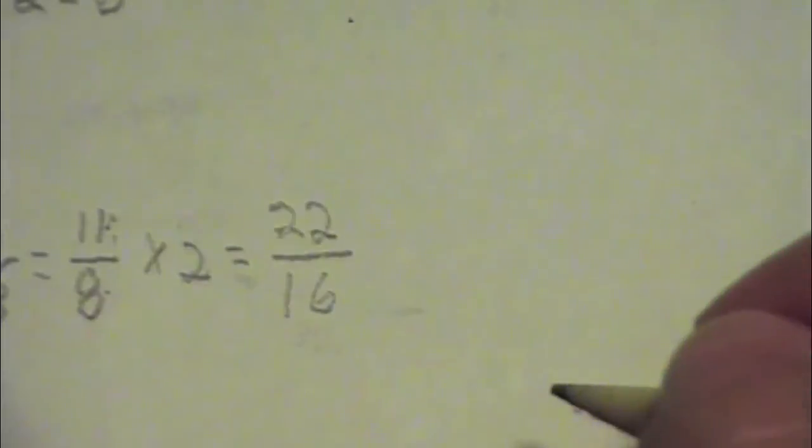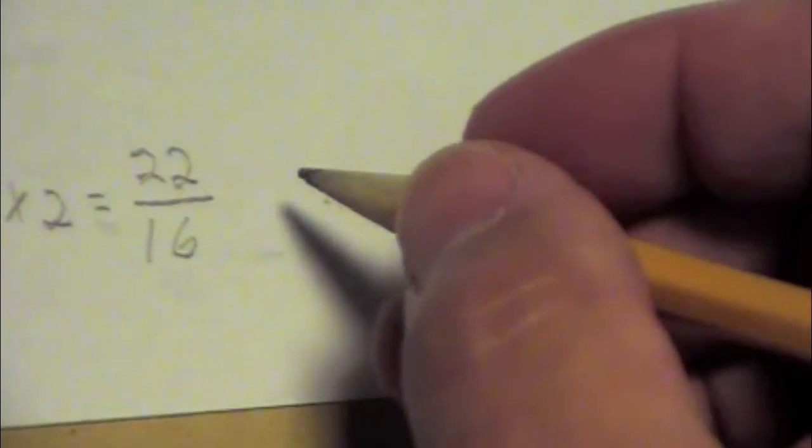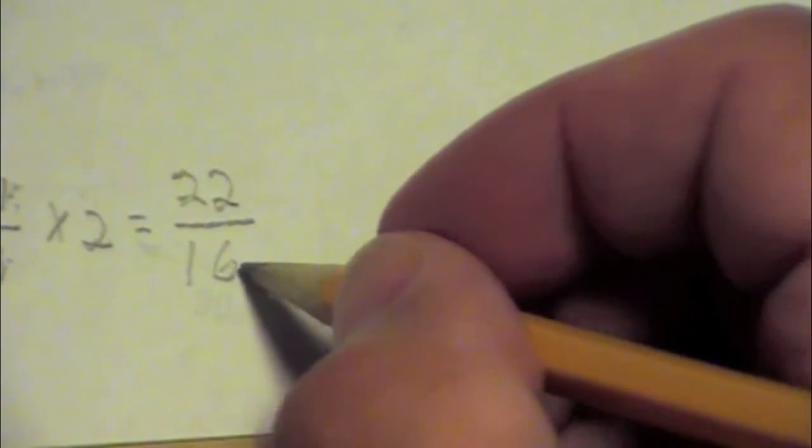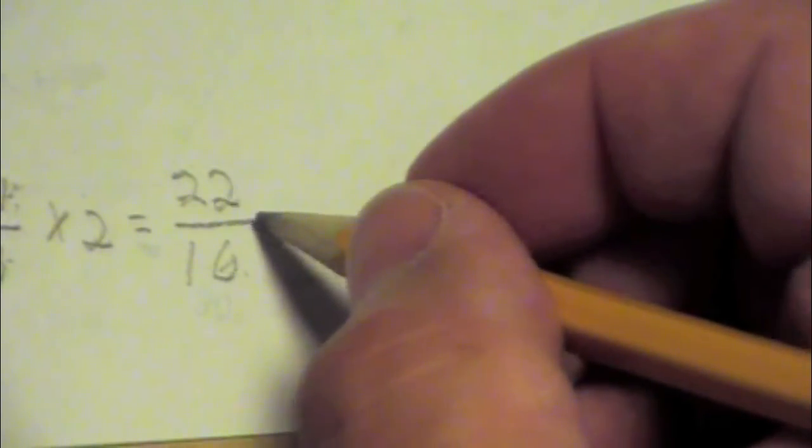Well, twenty-two sixteenths we can work with. When you're dividing a fraction, in this case, to find half of this, you're simply going to divide the top number.